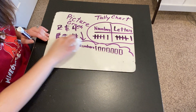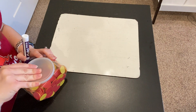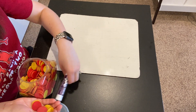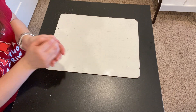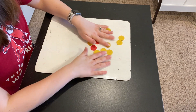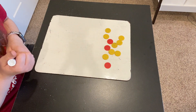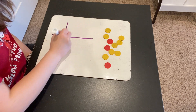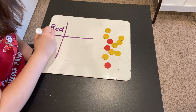Let's make one more graph together today. I'm just going to use some counters here. Now I'm going to shake them up in my hand and then pour them out on my board. I can make a real object graph here and sort these counters into two different groups. How would you sort these counters? I would sort these counters by color because they are two different colors — by red and by yellow.